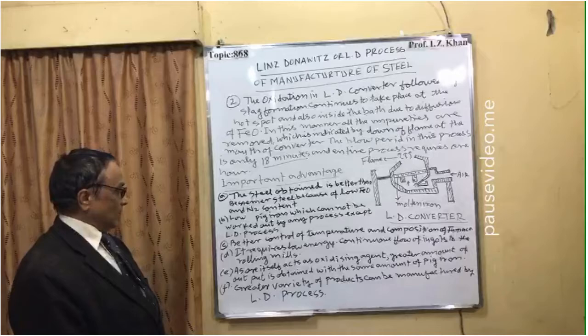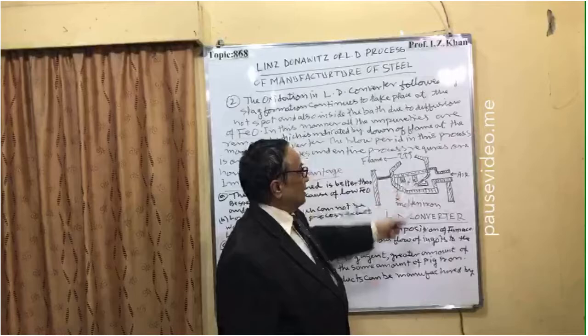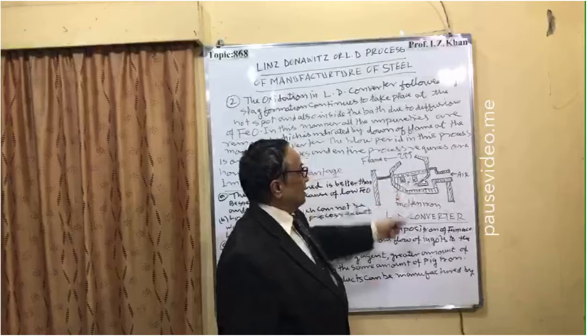E — Since oxygen itself acts as the oxidizing agent, a greater amount of output is obtained from the same amount of pig iron, so productivity is very high compared to the Bessemer process. F — A greater variety of products can be manufactured by the L.D. process. A diagram of the L.D. converter shows the flame going outside with molten iron inside and air passed through it.